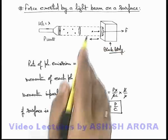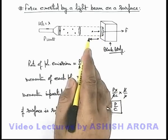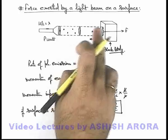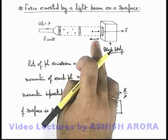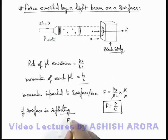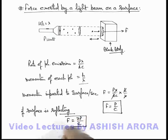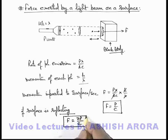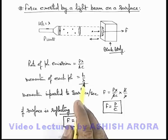So due to one incident photon, the change in momentum of the photon can be written as 2h/λ as it is in opposite direction reflection. So in this situation we can directly state the value of force in case of surfaces reflecting will be given as 2P/c, because rate of photon emission is same.